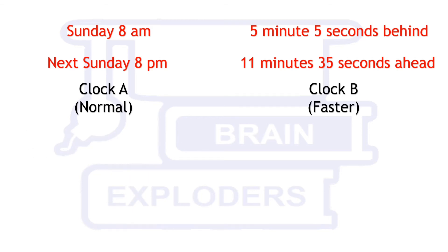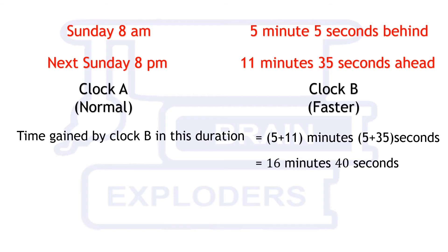Time gained by clock B in this duration equals 5 minutes 5 seconds plus 11 minutes 35 seconds, which is 16 × 60 + 40 seconds, or 1000 seconds.